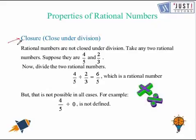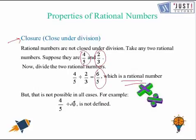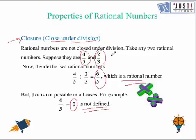Now we move ahead and we check whether closure property holds under division or not. 4 over 5 divided by 2 over 3 gives us 6 over 5, which is a rational number. But if the other number is 0, then we get the answer as not defined. So we can say that closure property holds under division only in some cases, not in all cases.